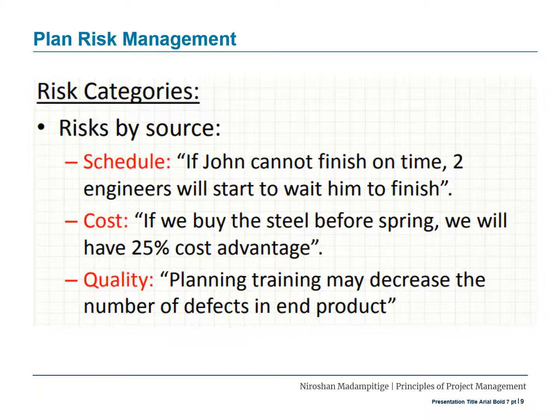For cost-related risks, an example would be: if you buy steel before spring, you will have a 25 percent cost advantage. If you have a situation like that, it is a cost risk — a risk associated with the budget and costing. Quality risks are associated with the quality of the project or product. For example, product planning and training may decrease the number of defects in the end product. Another example: if your QA resources are occupied by another project, you don't have anyone to do quality assurance — that is a quality risk.